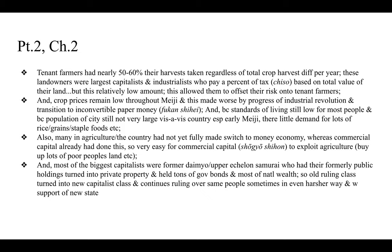Because standards of living were still low and urban populations were still small relative to the countryside — especially in early Meiji — there was little demand for large quantities of rice and staple foods. Also, many in the countryside had not yet fully made the switch to a money economy, whereas commercial capital already had — making it very easy for commercial capital (shogyo shihon) to exploit agriculture, buying up poor people's lands. Most of the biggest capitalists were former daimyo or upper-echelon samurai whose formerly public holdings had become private property, holding tons of new government bonds and most of the national wealth. The old ruling class was turned into the new capitalist class, sometimes ruling over the same people in even harsher ways.